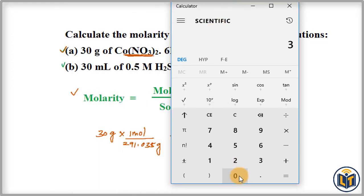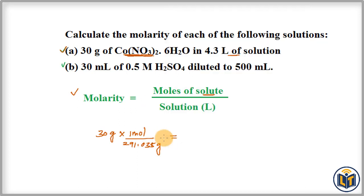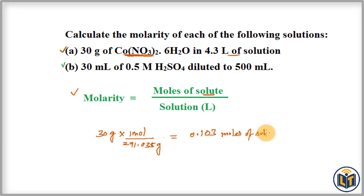We divide 30 by 291.035 to get the number of moles, which gives us 0.103 moles of solute. The volume of solution is already given in liters as 4.3 liters, so we can directly apply the molarity formula.